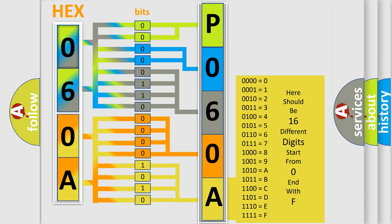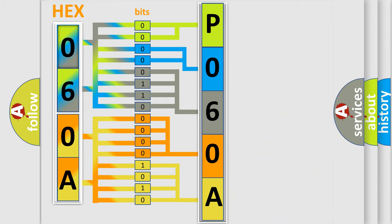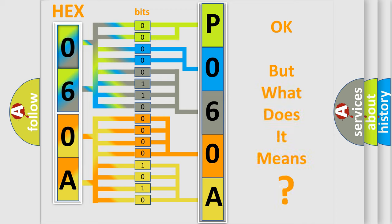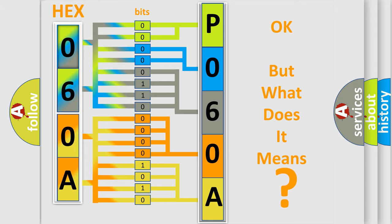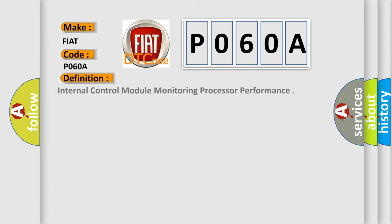We now know in what way the diagnostic tool translates the received information into a more comprehensible format. The number itself does not make sense to us if we cannot assign information about what it actually expresses. So, what does the Diagnostic Trouble Code P060A interpret specifically for FIAT car manufacturers? The basic definition is: Internal Control Module Monitoring Processor Performance. And now this is a short description of this DTC code.